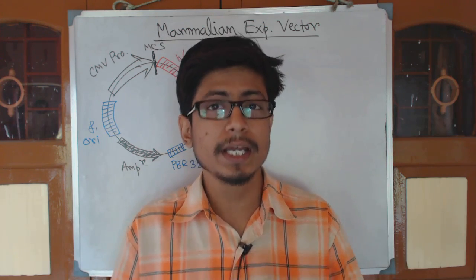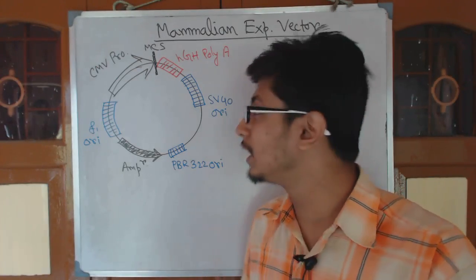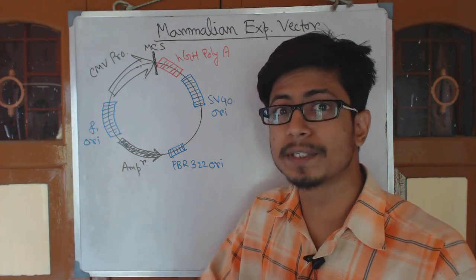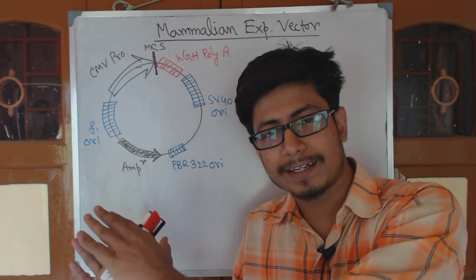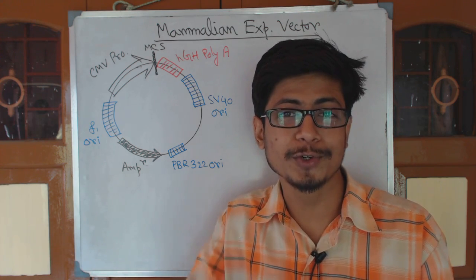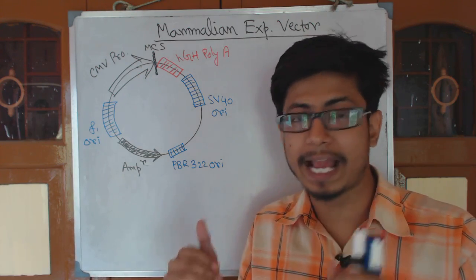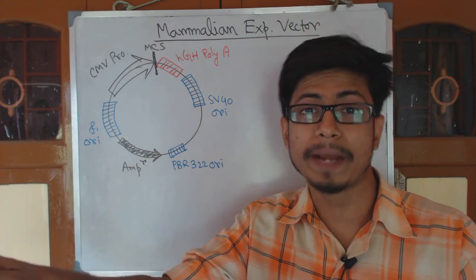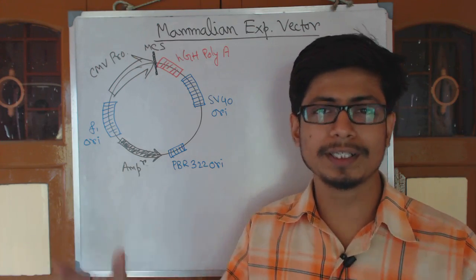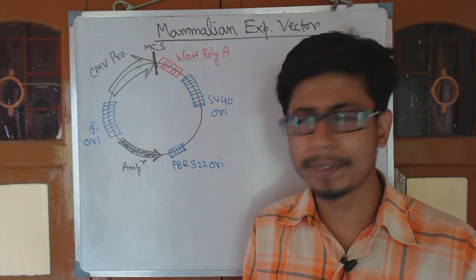Eukaryotic cells are much more complicated compared with prokaryotes. We have a vector that can be delivered inside the mammalian cell and express properly there. With the pET vector and bacterial systems, we simply insert DNA into bacteria by bacterial transformation using calcium chloride to make bacteria competent, and bacteria will take up the DNA. That process is easy.